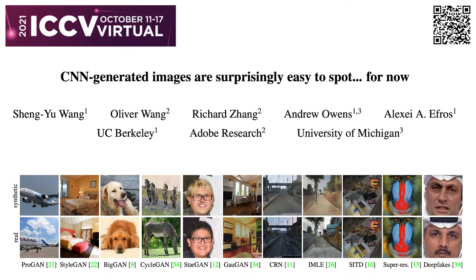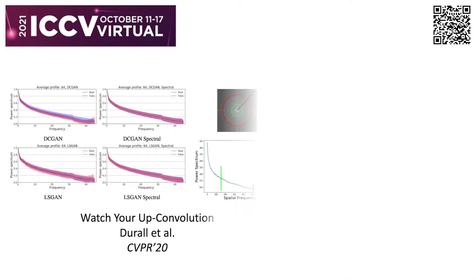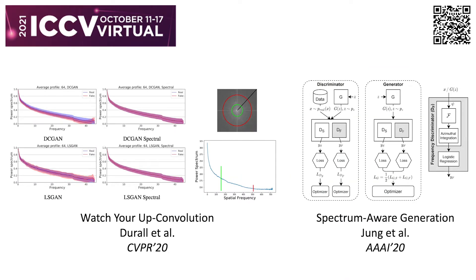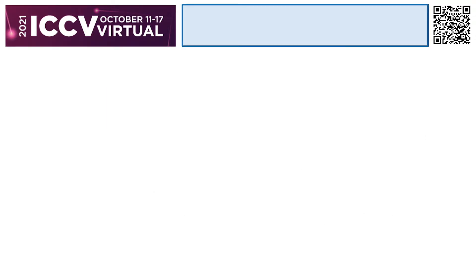The follow-up passive method from Berkeley and Adobe improves its cross-domain generalization. However, none of us are sure about the sustainability of such passive methods, as future development of deepfake techniques can circumvent existing detectors. For example, malicious generator inventors can take advantage of anti-detection training in the frequency domain to mislead existing detectors. To be sustainable in this cat-and-mouse game, we are thinking about using a proactive solution instead of passive detection.